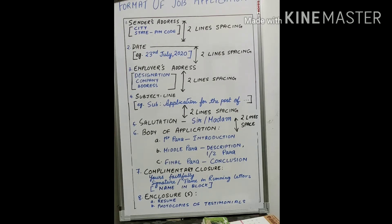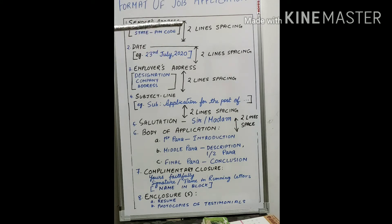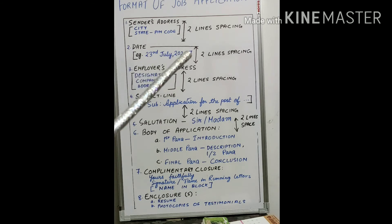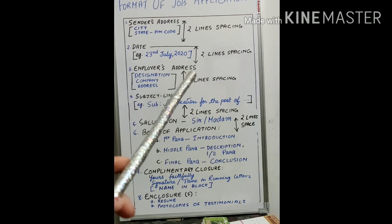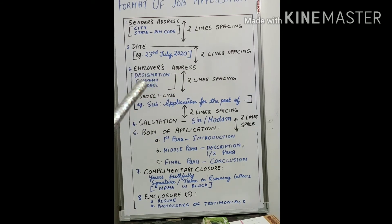Between the sender's address and the second element — the date — there should be a minimum of two line spacing. I have marked it with arrows so you can notice the gap. The date should be the date when you are writing the letter, and the format should be: date, month, year — for example, 23rd July 2020. This is the most preferred method of writing the date.